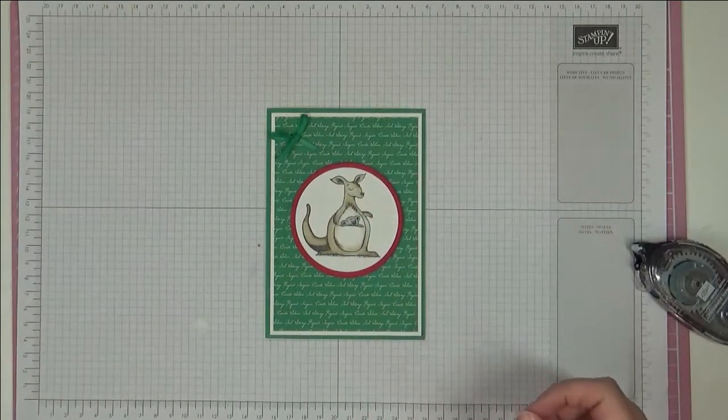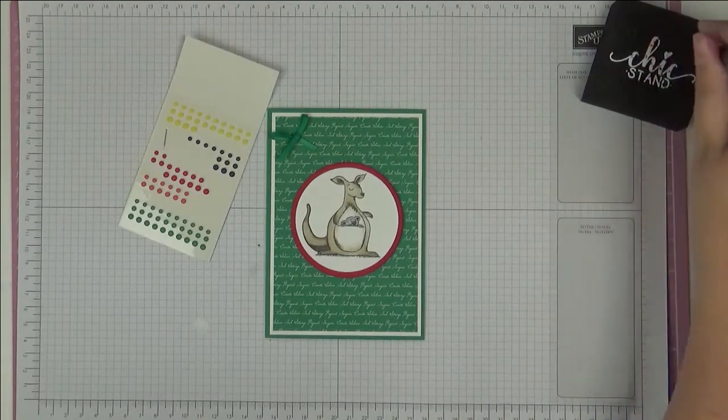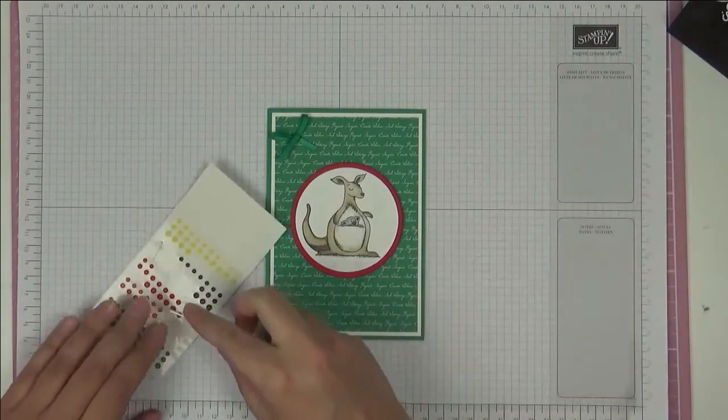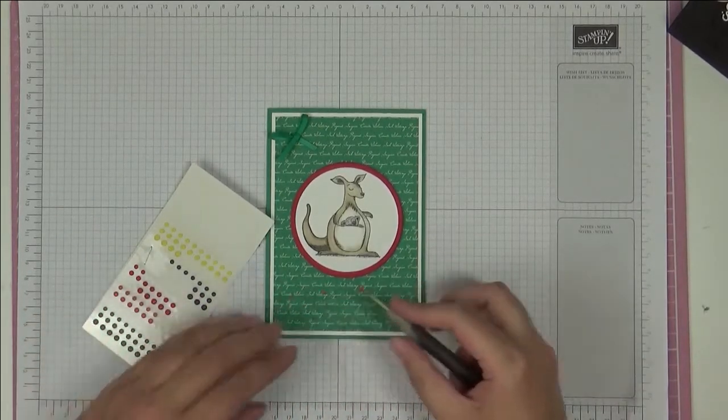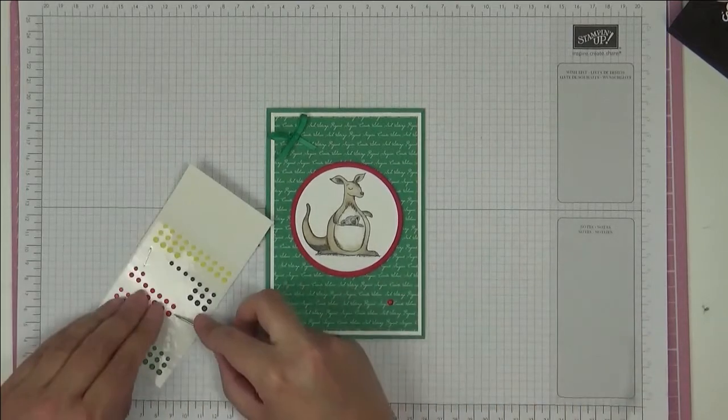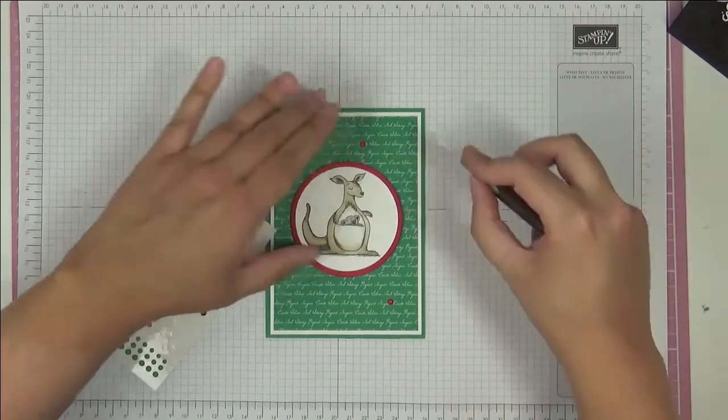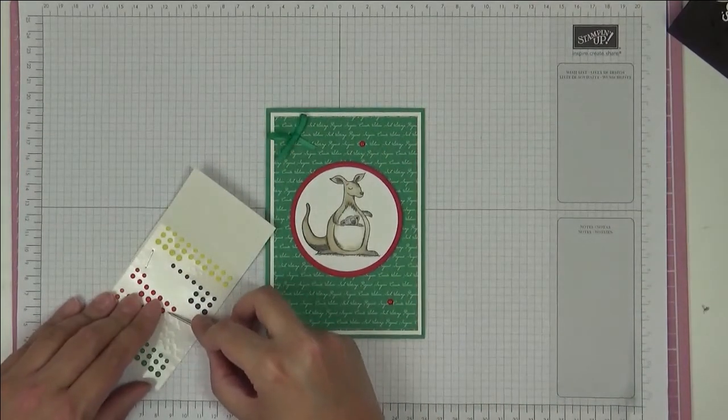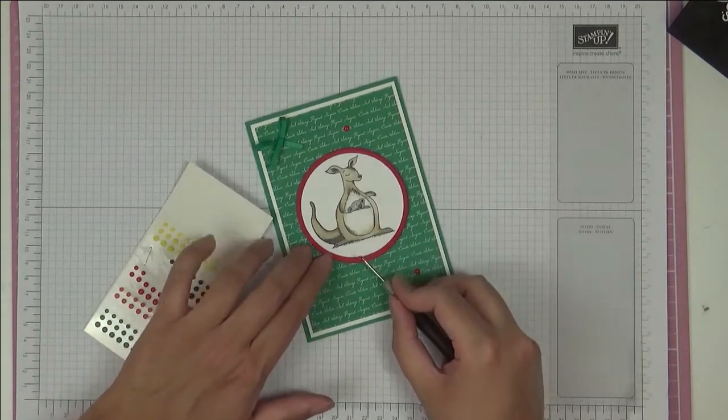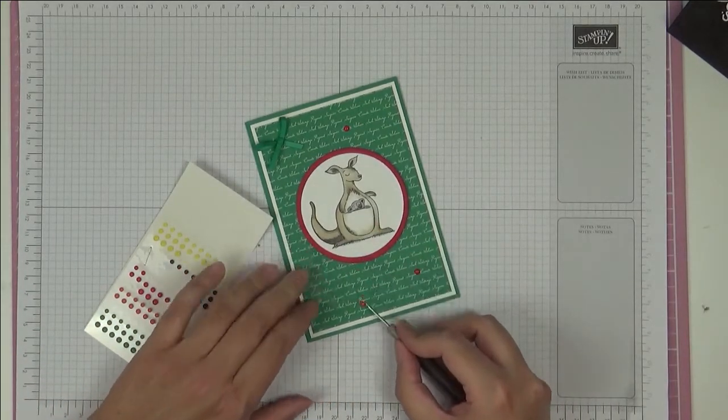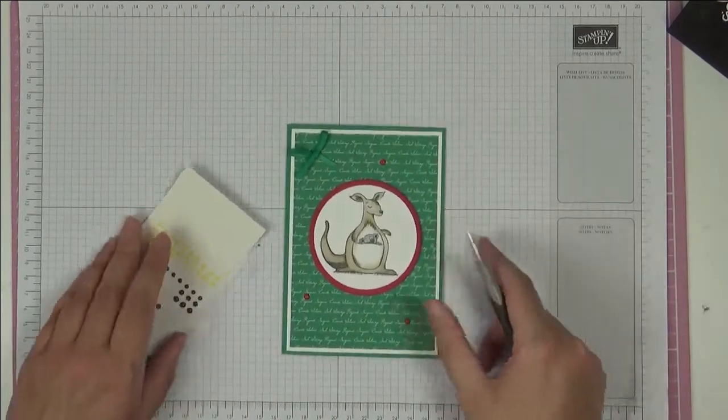And then the finishing touches. These are the Happiness Blooms enamel dots and I'm just going to use maybe three. I'm just going to dot them around the card just to bring that pink from here. They're the same pink, it's Lovely Lipstick, just to bring it out into the rest of the card.